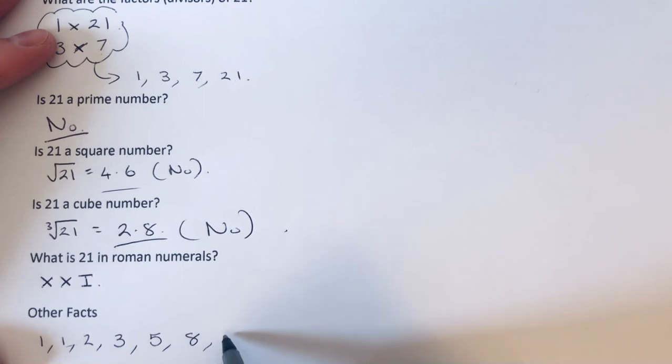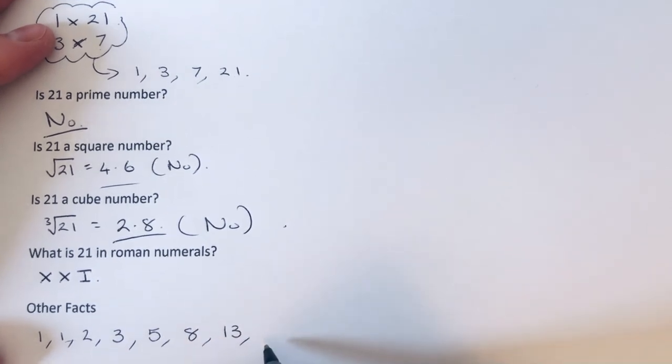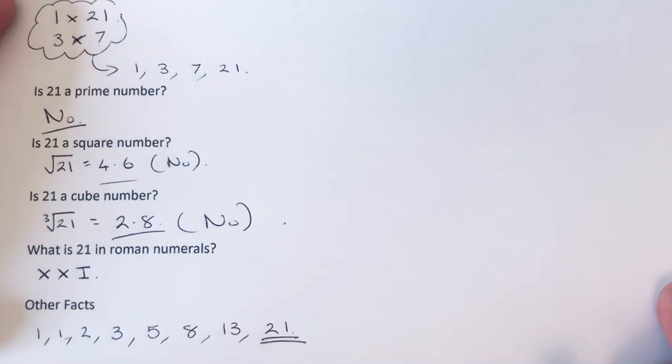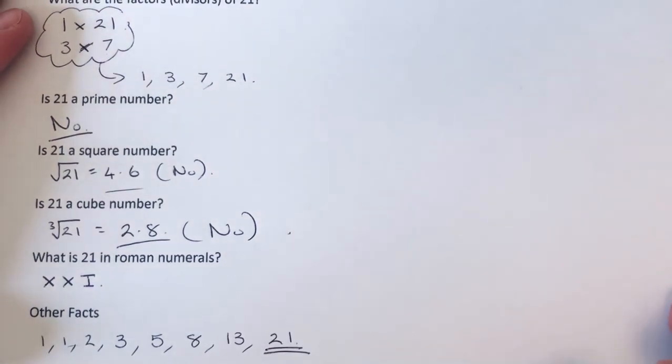Add the last two terms: 8 + 5 = 13. Add the last two terms again: 13 + 8 = 21. As you can see, 21 is in the Fibonacci sequence.